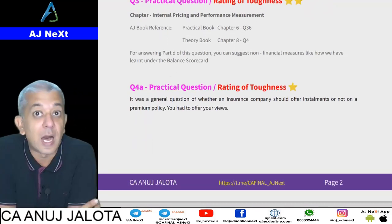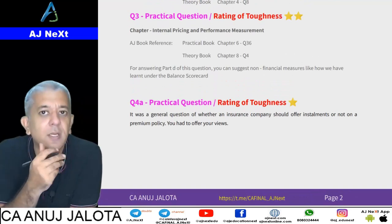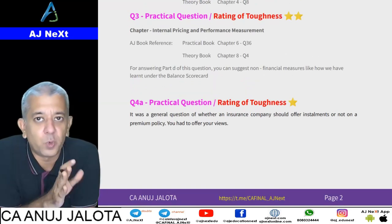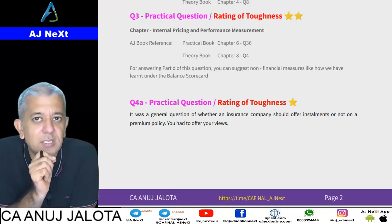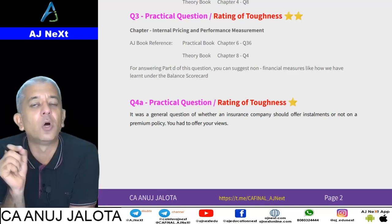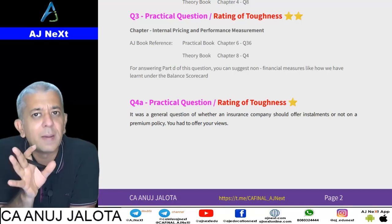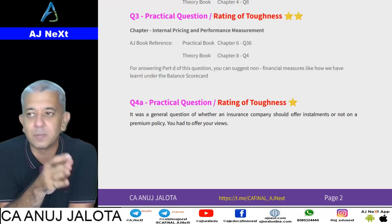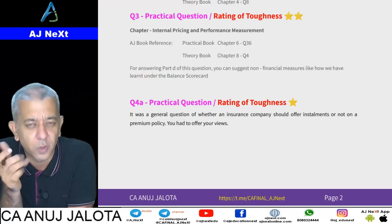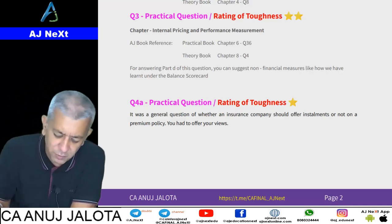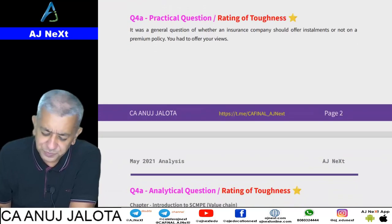Question Number 3 was about the ROI approach, which came under internal pricing towards the end. There was an RI (Residual Income / absolute income) approach and an ROI (Return on Investment) approach. A comparison was made between both approaches — according to one approach this department is better, and according to the other approach the other department is better.